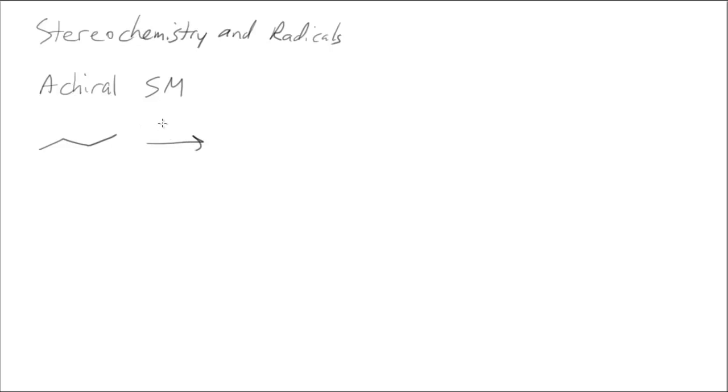So this time I've got butane. I can have Cl2 and h nu. Now if it makes the primary alkyl halide, that molecule is achiral. This carbon has two hydrogens on it so it's not a stereocenter.